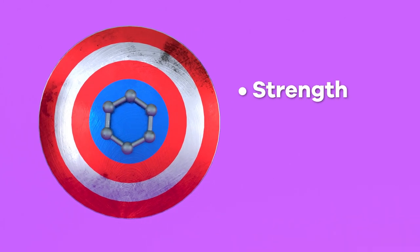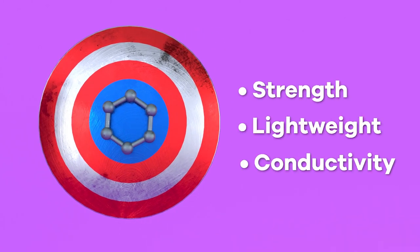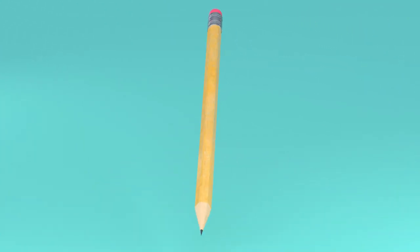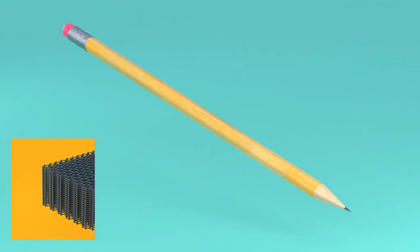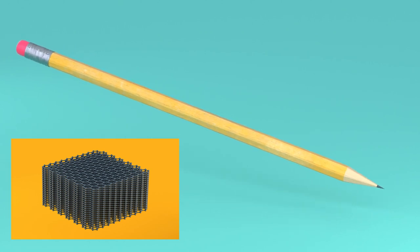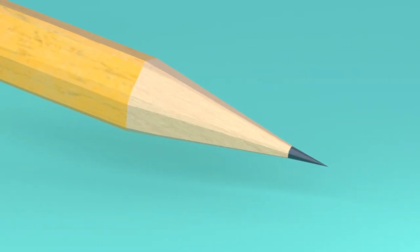Stronger than steel, lighter than paper and a better conductor than copper. Think of a pencil lead which consists of graphite. Graphite is millions of layers of graphene stacked onto each other. But my pencil tip easily breaks when I apply too much pressure. How is graphene the strongest material?